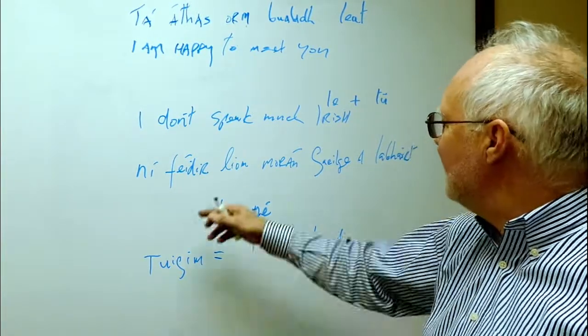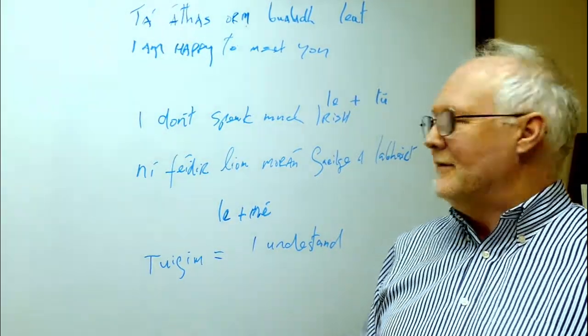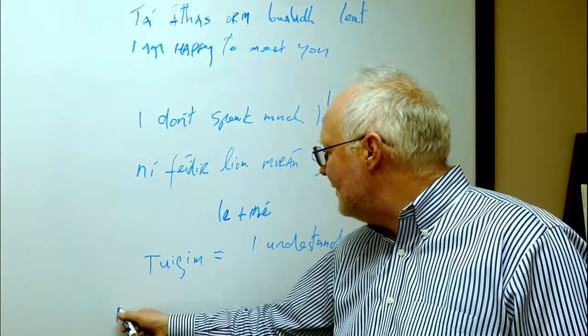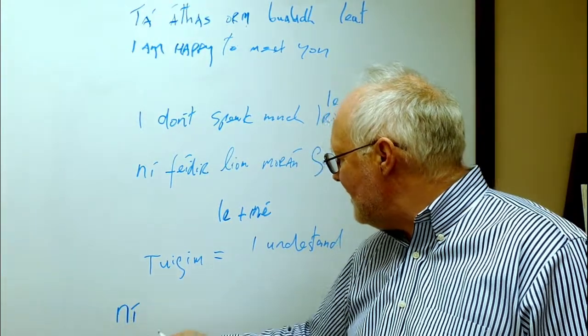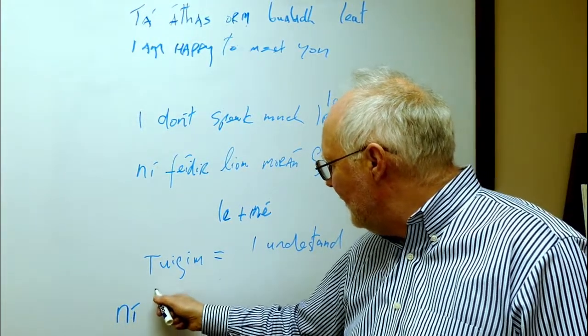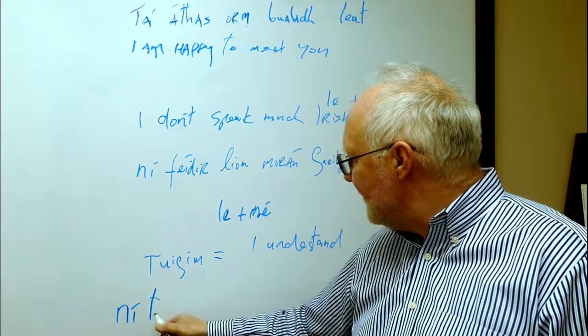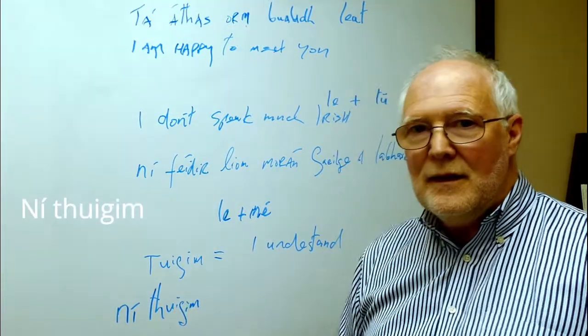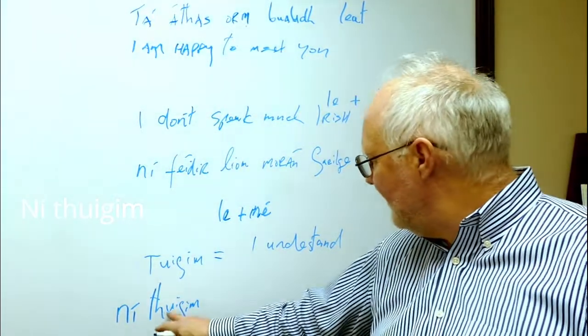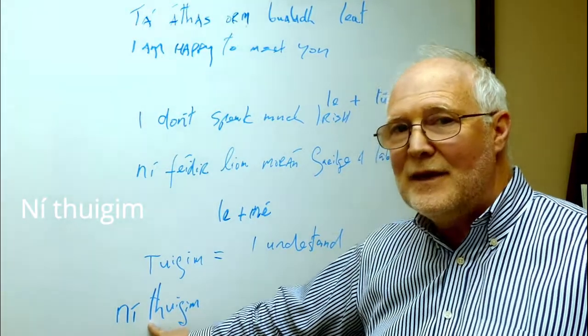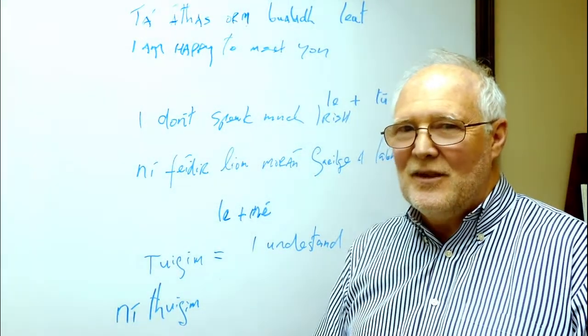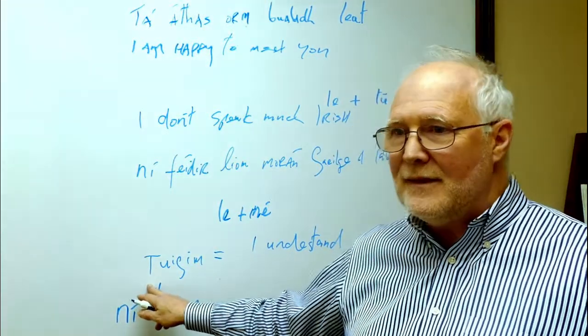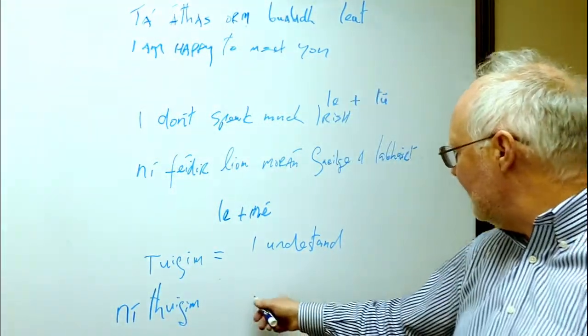And then if they say something fast like ni faid alam mooran ghaelga alawart, you say what? And then you say I don't understand. So the opposite of figum would be ni. And again, it's the same word. Ni. But because it's negative, you have to add the H. And it goes from figum to ni higum. Because the H on the T makes the T become an H. I know that sounds awful. But think about it as a dot over the T making the T become an H. Ni higum. I do not understand.